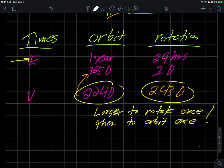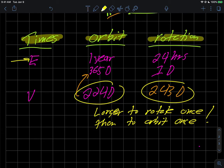In the last video we started this table where we were trying to compare and contrast some of the times it takes planets to do things, in particular orbit and rotate.